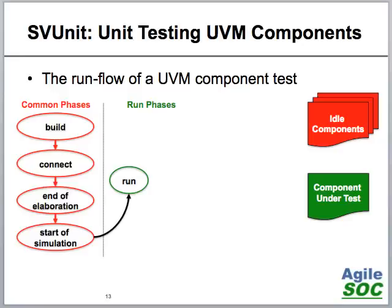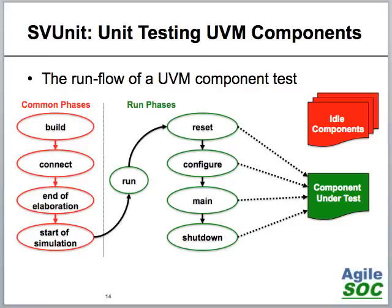The first difference happens when we enter the run phases. Here we're choosing to call the phase methods of only one component — in this case our green component under test — and none of the other components that have been instantiated have their run phase methods called. Those would be the idle components shown up in the corner.